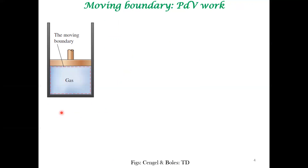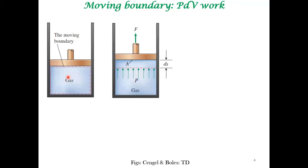We are going to look at boundary work. Here we have a cylinder with a piston, and the work we refer to is due to the movement of this boundary. The system is in a state of constant pressure, which makes it easier to define boundary work — we call this PDV work. With constant pressure P, multiplied by area A gives a force, and when the piston moves through displacement dS, the boundary work is F·dS = PA·dS = P·dV.